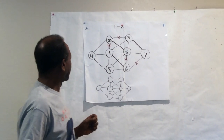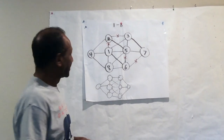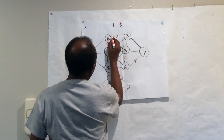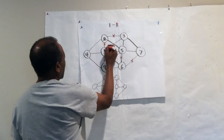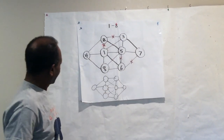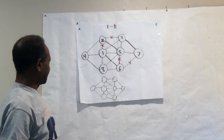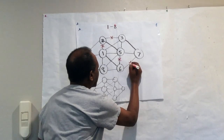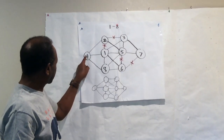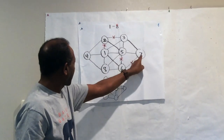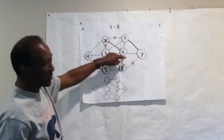Now let's look if this student separates consecutive numbers. Here, do you see two and three? Two and three are connected by this line, so that's a mistake. One and two are connected by this line. Five and six are connected by this line. And six and seven are connected by this line. The rest of the numbers are good — three and four are separated, eight and seven are separated.